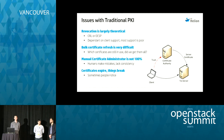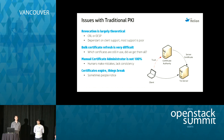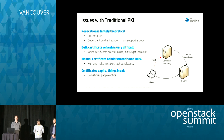The certificate authority also provides revocation functionality, so if the administrator decides he shouldn't have issued a certificate, or if it becomes compromised, he can revoke it. However, revocation is largely theoretical. There are two mechanisms: CRL and OCSP. Certificate revocation lists become largely unwieldy in real life. OCSP is implemented in some web browsers but in almost no client libraries whatsoever, so neither works particularly well in service-to-service architectures.